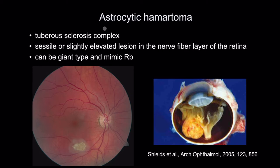The astrocytic hematoma can be part of the tuberous sclerosis complex, or it can be an isolated finding. You get this sessile, slightly elevated lesion in the nerve fiber layer of the retina, often described as mulberry-like. It can be a giant type that mimics retinoblastoma — and this eye had to be enucleated.